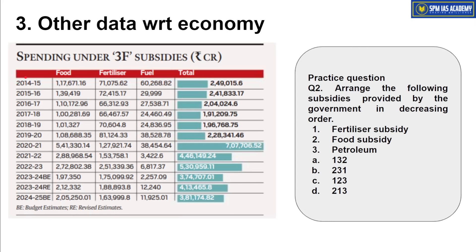Regarding subsidies: the government mainly provides three types of subsidy — food, fertilizer, and fuel — known as 3F subsidy. The largest share goes to food subsidy, with Pradhan Mantri Garib Kalyan Anna Yojana being the biggest scheme. Then comes fertilizer subsidy — urea has a controlled pricing scheme, while non-urea fertilizers have a nutrient-based subsidy. For fuel: there is the PAHAL scheme for LPG; petrol and diesel have no subsidy; and kerosene gets a small subsidy.